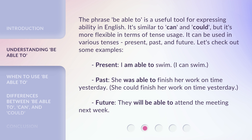Let's check out some examples. Present: 'I am able to swim' — or 'I can swim.' Past: 'She was able to finish her work on time yesterday' — or 'She could finish her work on time yesterday.' Future: 'They will be able to attend the meeting next week.'